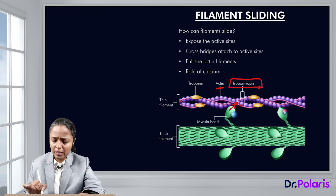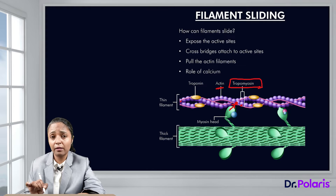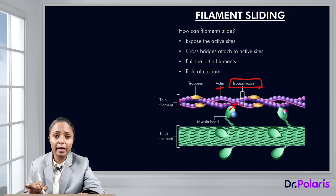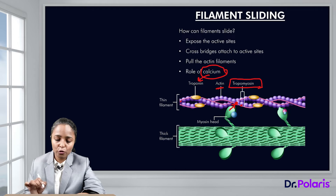For the interaction of myosin and actin to occur — so that contraction can take place and the actin filament can slide over the myosin filament — we need to expose the active sites of actin. This is brought about by calcium, which in turn interacts with troponin.